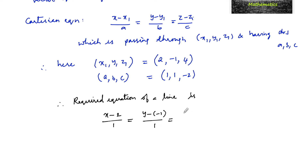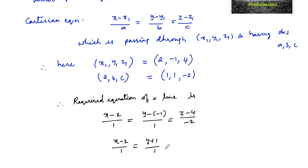We can also write this as: (x - 2)/1 = (y + 1)/1 = (4 - z)/2. That's the answer.